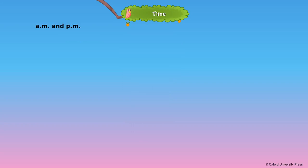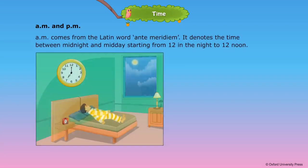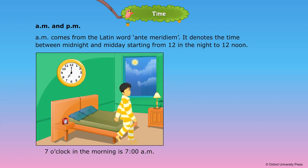A.M. and P.M. The clock shows only 12 hours. How do we read time for 24 hours of a day? A.M. comes from the Latin word ante-meridiem. It denotes the time between midnight and midday, starting from 12 in the night to 12 noon. 7 o'clock in the morning is 7 a.m.